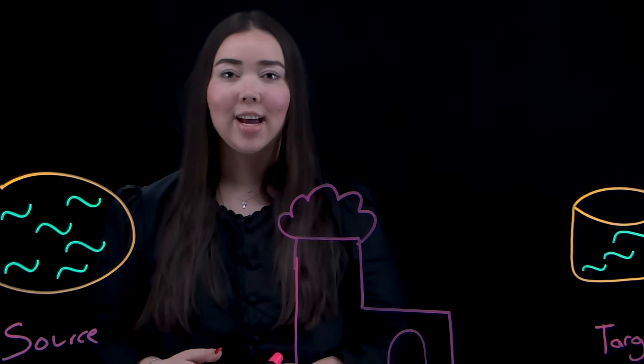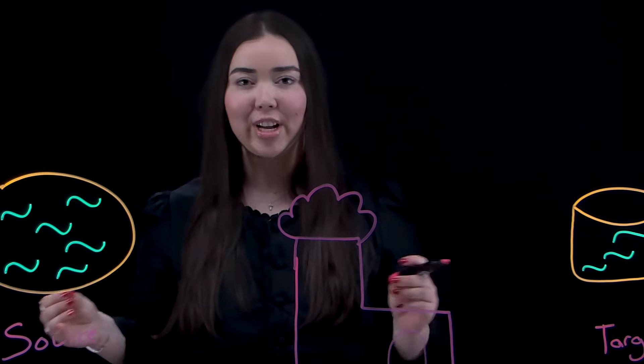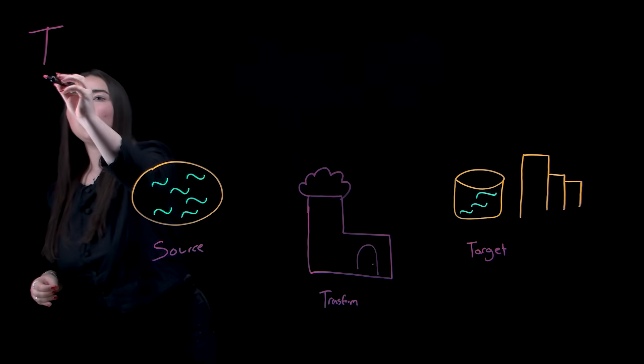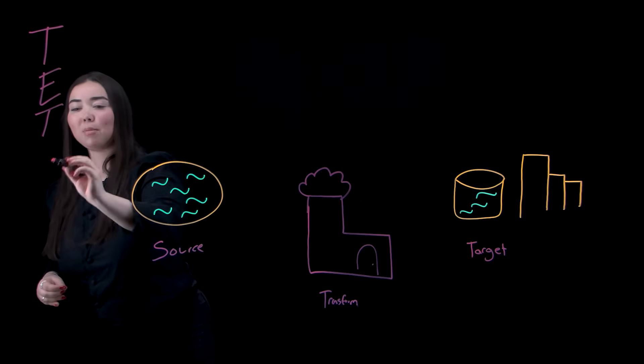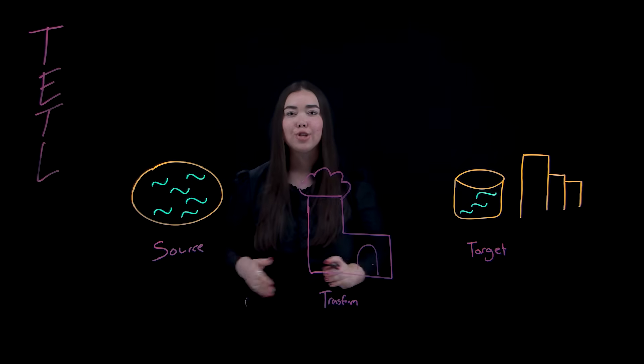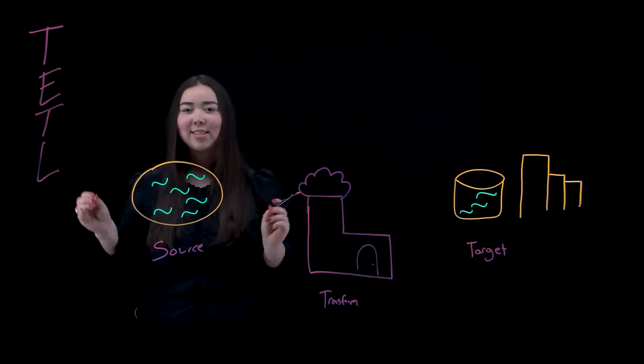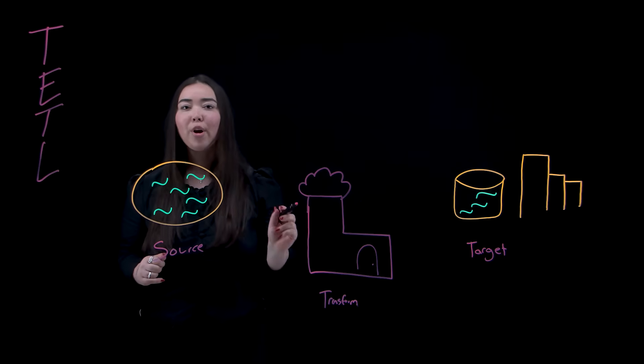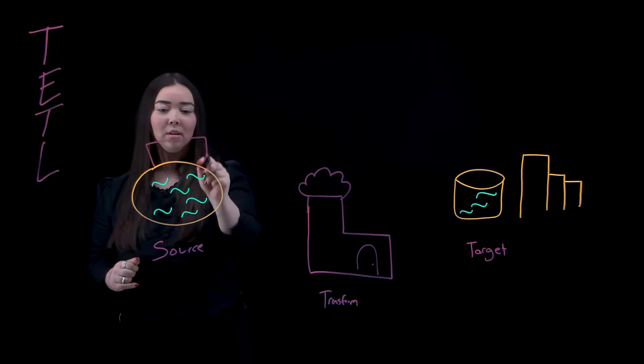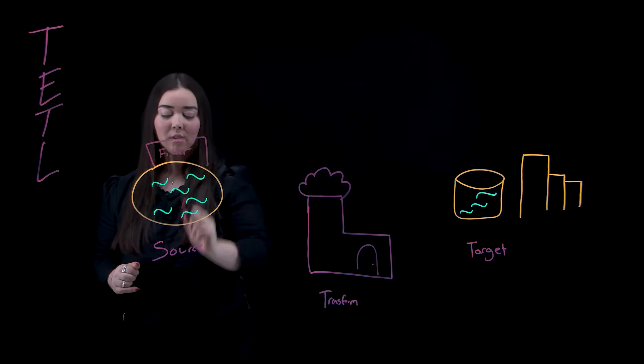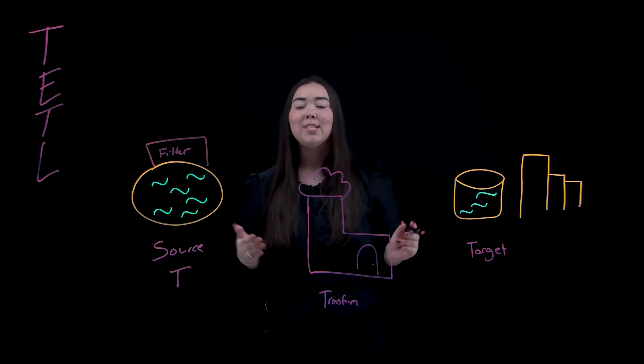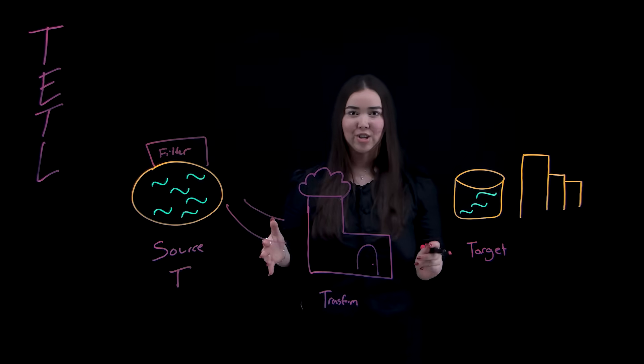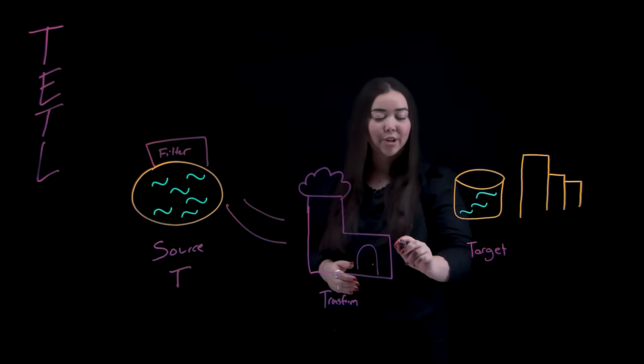You've heard of ETL and ELT, but there's another flavor of where the transformation happens, and that is TETL. It stands for transform, extract, transform, and load. TETL introduces a pre-transformation step at the source before extraction. Think of this like a lightweight filter for water before it goes through your pipes. You clean the water early so it doesn't clog up your system. Then after it's moved, you do the heavier transformation before loading it into your target system.